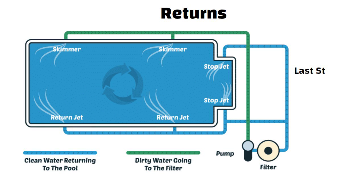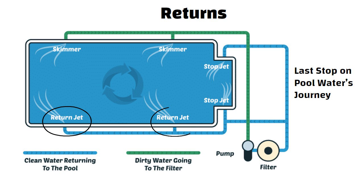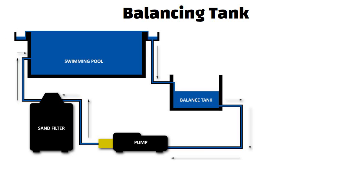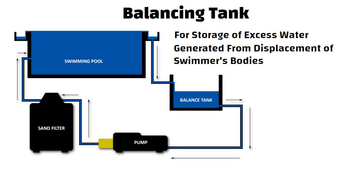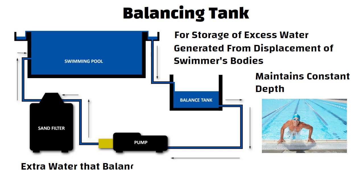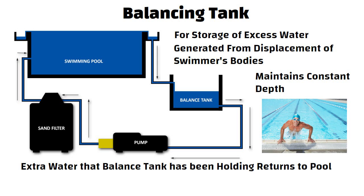Returns are the last stop on pool water's journey where it returns to the pool. Returns are usually located in at least two spots around the pool, though some older pools may have only one. Balancing tank. Balancing tanks are primarily used for the storage of excess water generated from the displacement of swimmers' bodies. A pool with a balancing tank maintains a constant depth regardless of how many people are in the pool. Once the swimmers exit the pool, the extra water the balancing tank has been holding returns the pool to its normal operating level.